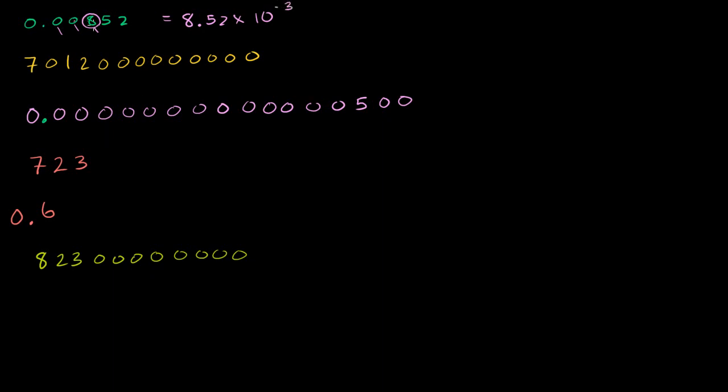Another way to think of it: this is like 8½ thousandths. Each of these positions represents thousandths, and we have 8½ of them.